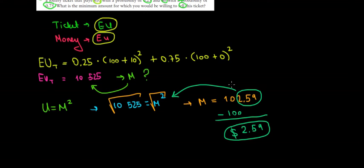If we get additionally $2.59 and we have in total $102.59, we would get the same expected utility from this certainty, from this level of money that we have, as we would get it by taking the gamble with the ticket. Hope this makes sense and we are done.